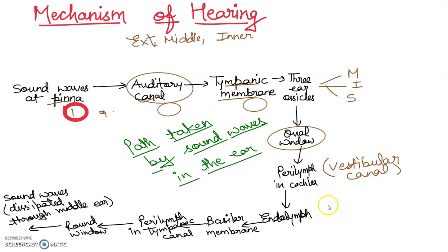These vibrations cause the movement of the basilar membrane and the endolymph, which in turn moves the sensory hair cells. The organ of Corti is attached to it, creating a nerve impulse. These sound waves are converted to nerve impulses, which travel through the auditory nerve to the auditory cortex — the region of the brain.